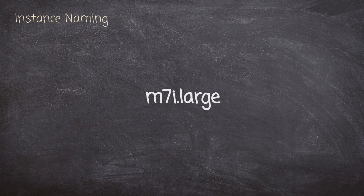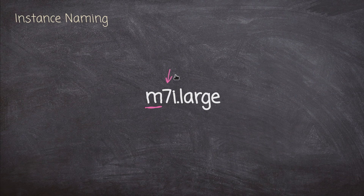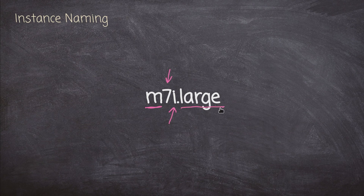Let's look at an instance name — what's in a name? Take M7i large. The M tells me this is a general purpose instance. The 7 tells me it's the seventh generation — there was an M6 and M5 still available, but AWS typically ends-of-life something several generations behind. The I here tells me it's an Intel-based instance with an Intel CPU. And 'large' is the relative size.